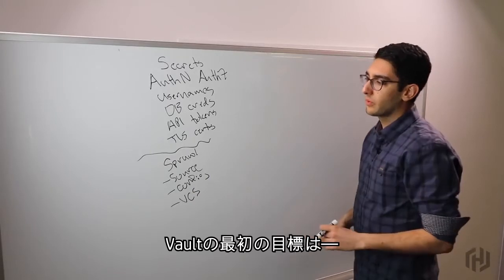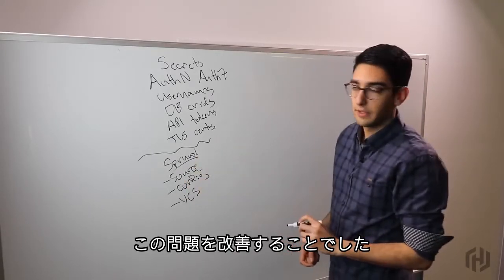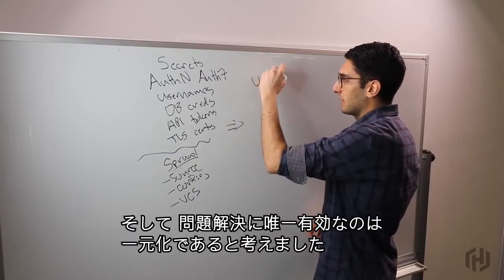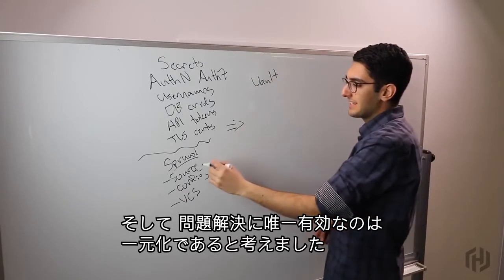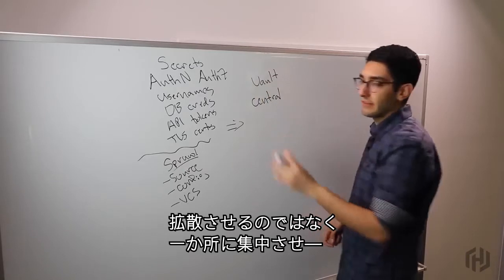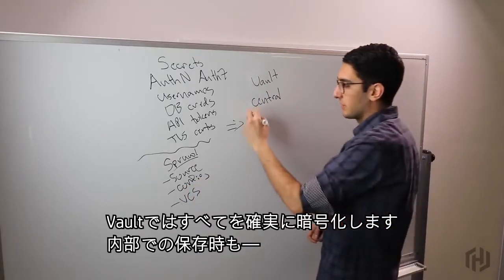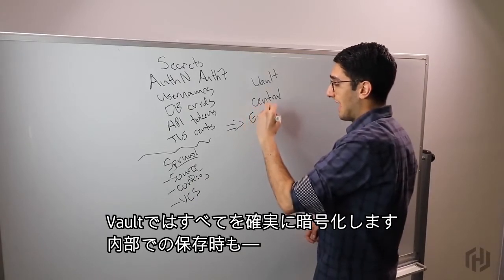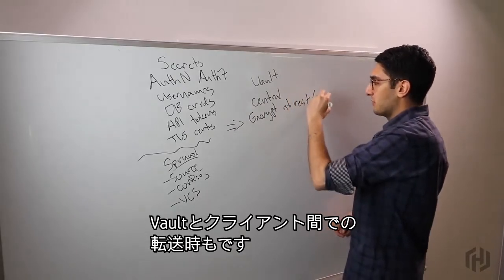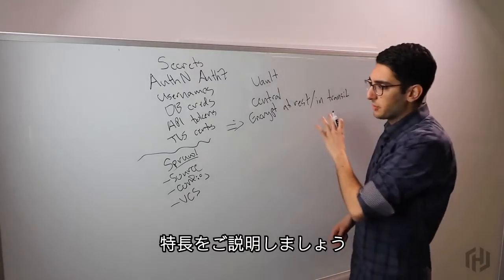One of our first goals when we started working on Vault was to really look at this problem and say, how can we improve it? Vault really starts by looking at the secret sprawl problem and saying we can only solve it by centralizing. So instead of having things live everywhere, we move all of these secrets to a central location and Vault promises we're going to encrypt everything, both at rest inside of Vault, as well as in transit between Vault and any of the clients.